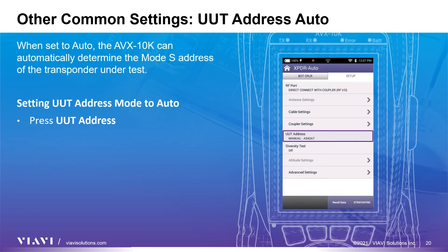Using the mode S address as an identifier, the AVX10K can automatically determine the mode S address of the transponder under test. In the auto condition, the AVX10K sends out an all call and the transponder will respond with its mode S address. The AVX10K will also use the UUT address to save test results by including this information in the name of the test result file, which helps technicians look up and manage reports by aircraft.